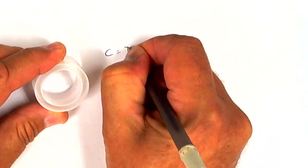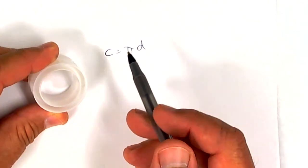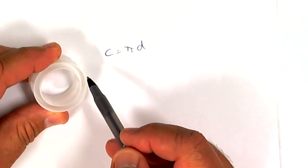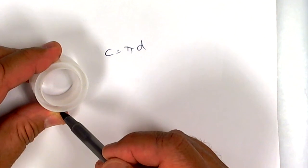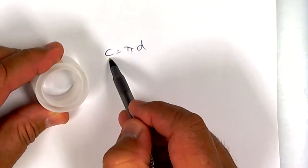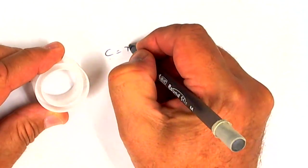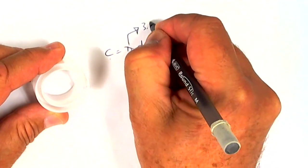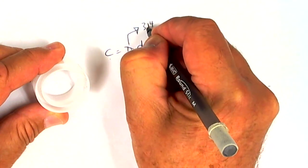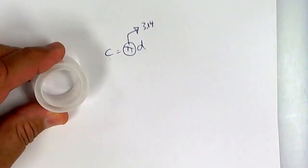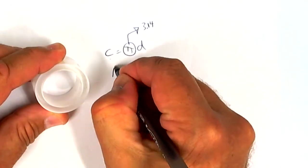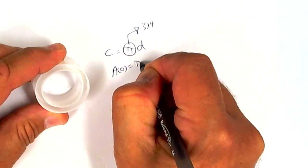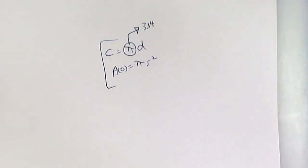Circumference is equal to pi times diameter. It's similar to perimeter, but perimeter is for polygons. This is a curved figure, so they give it a special name called circumference. Circumference is pi times diameter. Pi is usually 3.14. That's what we're going to use. Sometimes they tell you to leave it in terms of pi. Area of a circle is pi radius squared. So copy down these two formulas and memorize them.